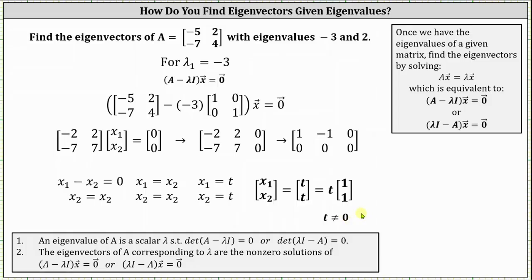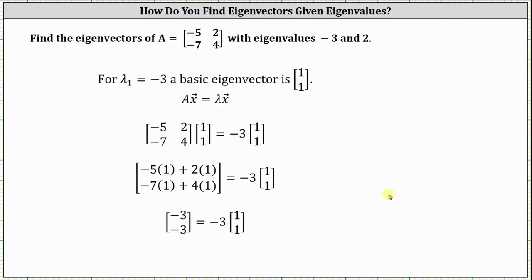Because the eigenvectors are in the form of t times the vector one, one, we can say that for lambda sub one equals negative three, a basic eigenvector is the vector one, one. Let's check that it satisfies the eigenvector equation: matrix A times vector x equals lambda times vector x. We can see the equation is true for the vector one, one because the vector negative three, negative three is equal to negative three times the vector one, one.